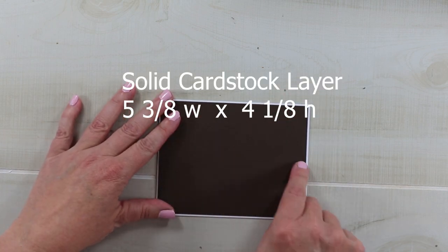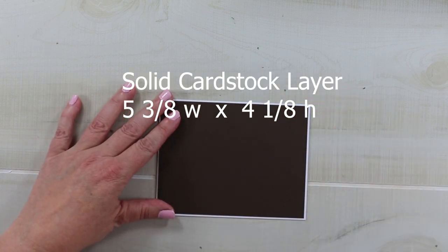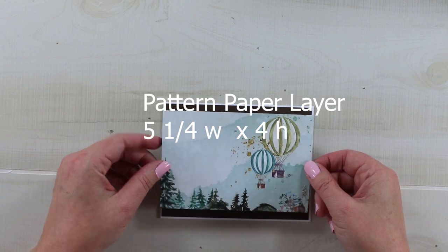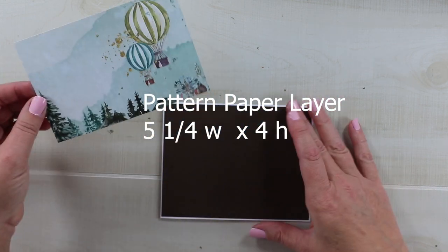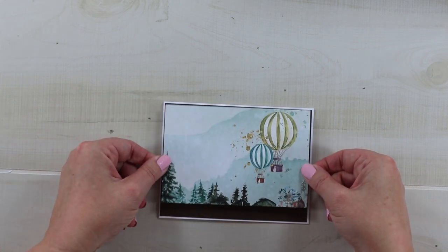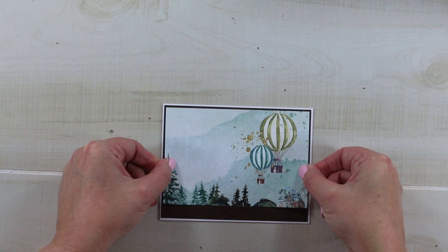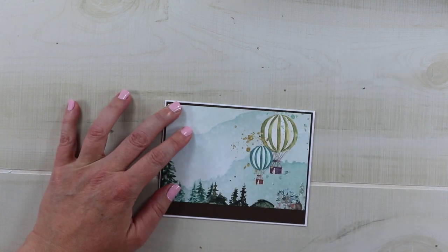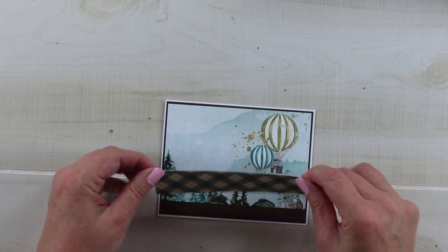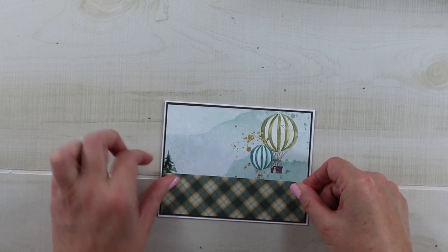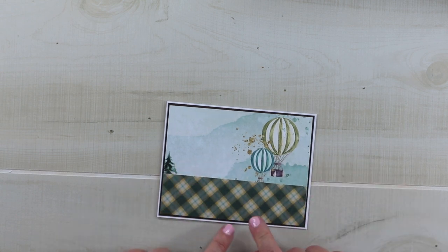This matting layer is five and three eighths by four and eight and my pattern paper I'm bringing in is five and a quarter by four. Now this one is just a little shy because I used an off cut from another section, so I'm going to make up that difference with a layering strip of that pretty plaid. Normally if you were to cut the full size sheet it would be five and a quarter by four and that would cover that area giving you an eighth of an inch border on your cardstock and then also on the base.